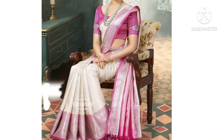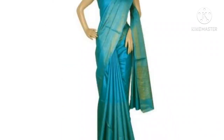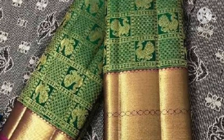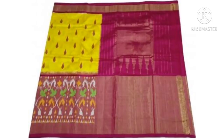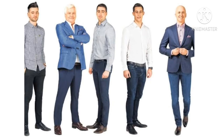Some famous silks are: Assam silk sarees, Art silk sarees, Banarasi silk sarees, Tassar silk sarees, Chanderi silk sarees, Dharmavaram silk sarees, Kanjivaram silk sarees, Mysore silk sarees, and Pochampalli silk sarees.